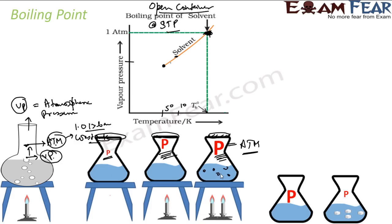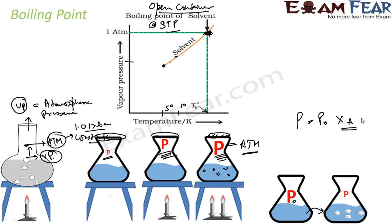The third concept, which you already know, is that the moment you add a solute to a solution the vapor pressure decreases. We have seen Raoult's law: P = P₀ × x_A. If P₀ is the original pressure, then P after adding solute decreases because the mole fraction x_A is less than 1.